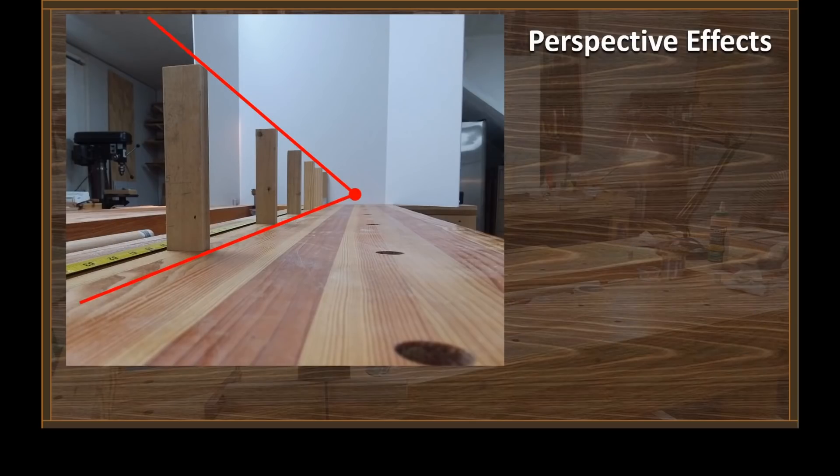The best way to demonstrate perspective is to set up a simple observation, and that's what I've done on my workbench. You can see I've got six wooden blocks there, all exactly the same height. But when you space them apart going away from you, you see the perspective effect. The blocks in the distance appear to be getting smaller and smaller.